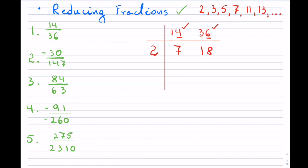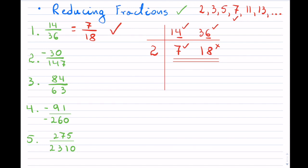2 goes into 14 seven times, and 2 goes into 36 eighteen times. That has reduced this fraction to 7 over 18, and I will check if I can reduce it any further. Since 7 is already a prime, I check if 7 goes into 18 evenly — unfortunately it does not — which means I stop right here. So 7 over 18 is the answer.